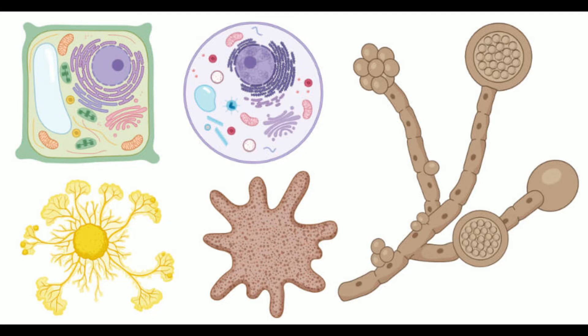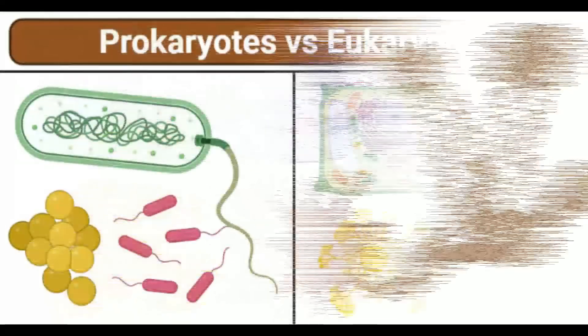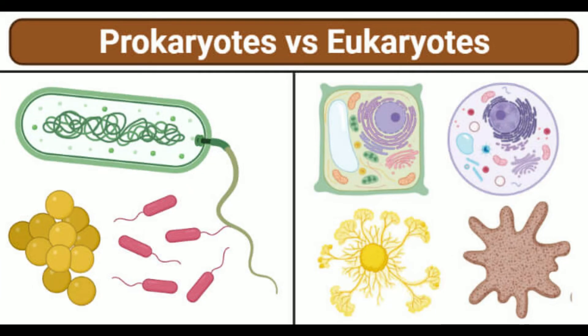Recombination: Another asexual mode of reproduction in prokaryotic cells is via recombination, where the genetic material of one cell is incorporated into another prokaryote via transduction, transformation, and conjugation. In conjugation, two cells are connected via sex pili where genes are transferred through the pili. In transformation, the prokaryotic cell takes up genetic material from the environment and incorporates it into the bacterial chromosome. In transduction, the exchange of genes occurs via viral infection: a bacteriophage first infects one bacterium, takes up the targeted gene, and transfers it to another cell.